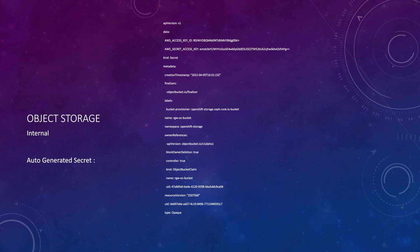Under the data section, you can see the access key ID and then the secret access key, which is equivalent to user ID and password. These values are actually coming from the ODF internal RADOS gateway and they are encoded.